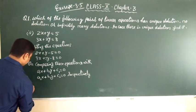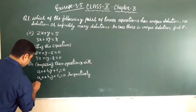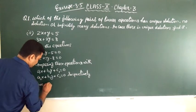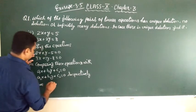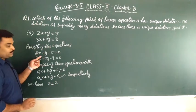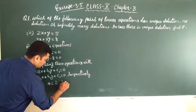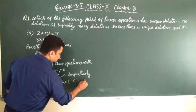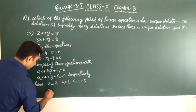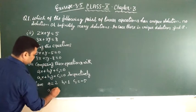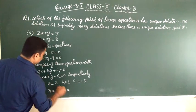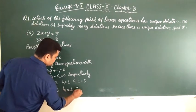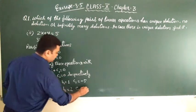We have a1 is equal to 2, b1 is equal to 1 and c1 is equal to minus 5, a2 is equal to 3, b2 is equal to 2 and c2 is equal to minus 8.